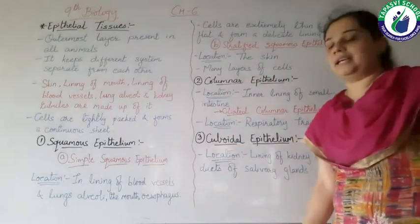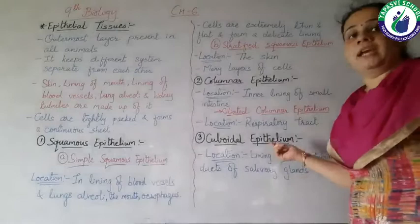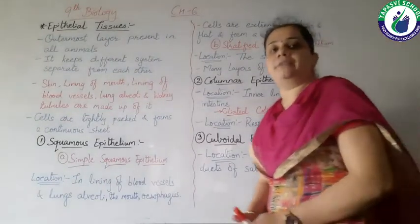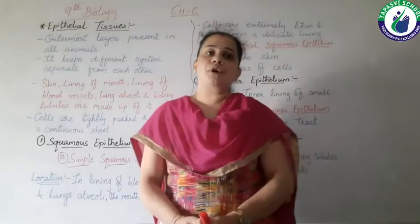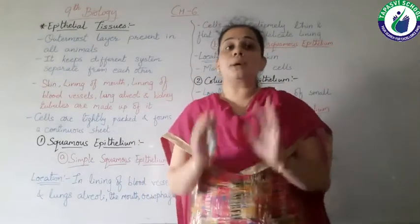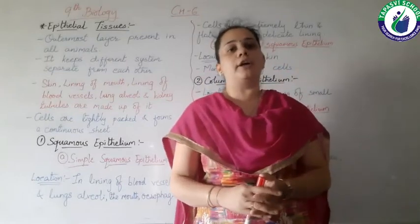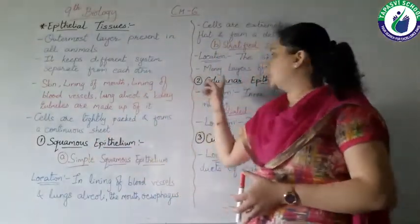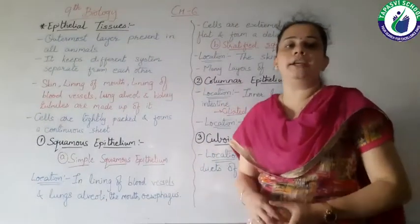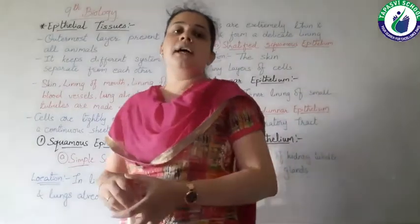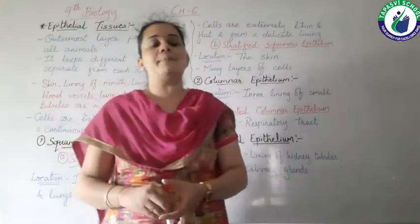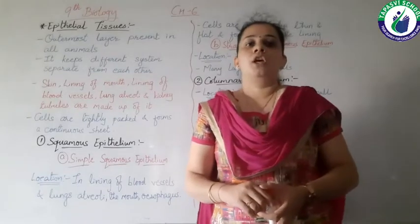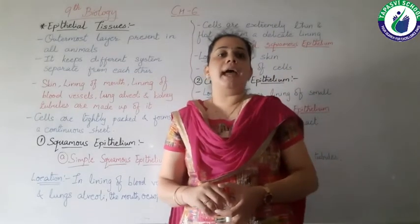Cuboidal epithelium is generally present in the lining of kidney tubules as well as in the ducts of salivary glands. These types of tissues generally give support to any organ or organ system. Sometimes the cells of epithelial tissues fold inwards, which is why they are known as glandular epithelium. So this is all about the epithelial tissues.